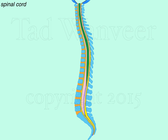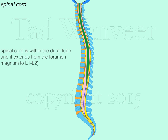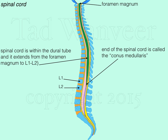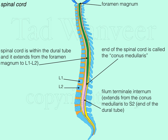The spinal cord is housed and encased within the dural tube. The spinal cord extends from the foramen magnum to between lumbar levels L1 and L2 in an adult. The lower end of the spinal cord is called the conus medullaris. From the very tip of the conus medullaris, the pia mater membrane — shown in this drawing as a red line — extends from the conus medullaris to S2, and is called the filum terminale internum.